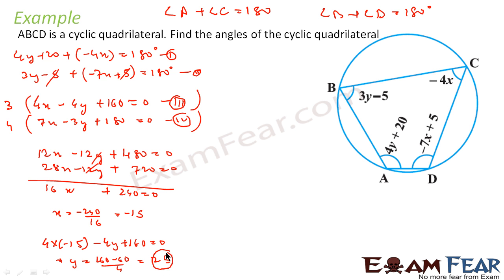So I have the value of x and I have the value of y, but the question is I have to find the angles. So angle A is nothing but 4y plus 20, that is nothing but 4 into 25 plus 20, and that is 120. So this is 120 degrees.